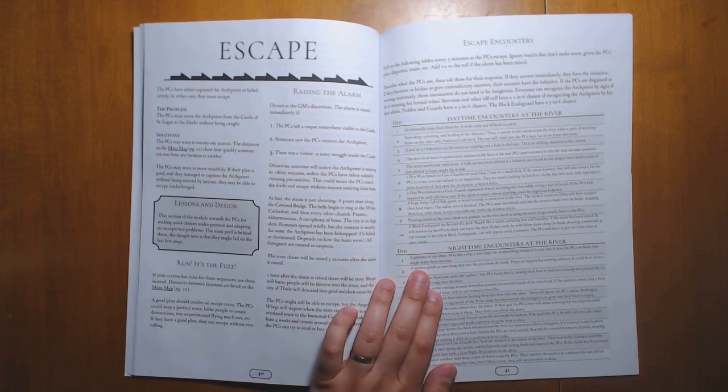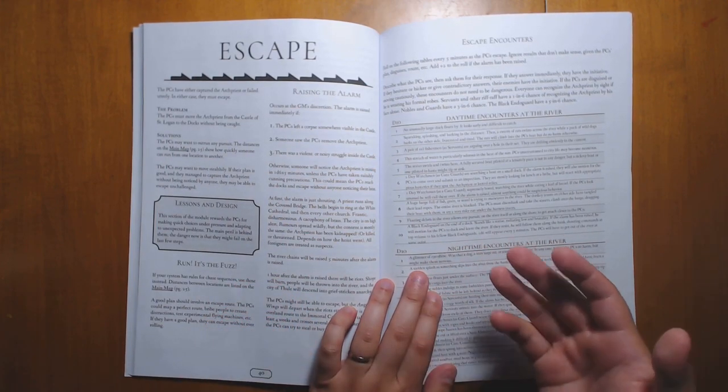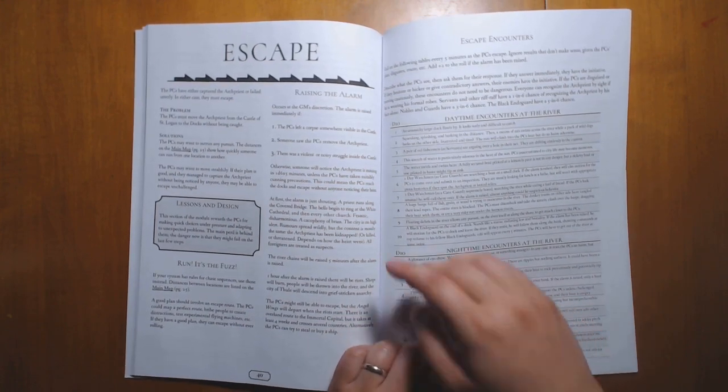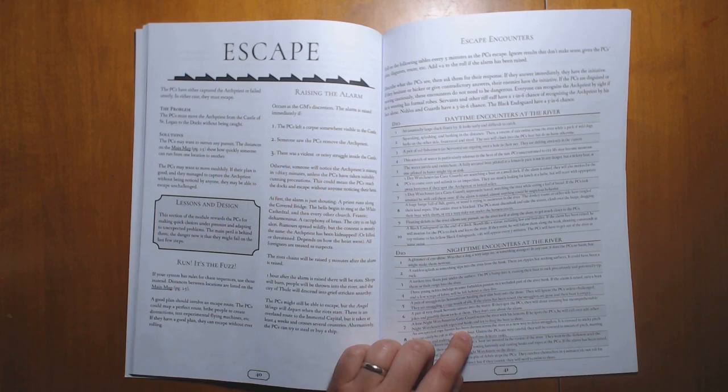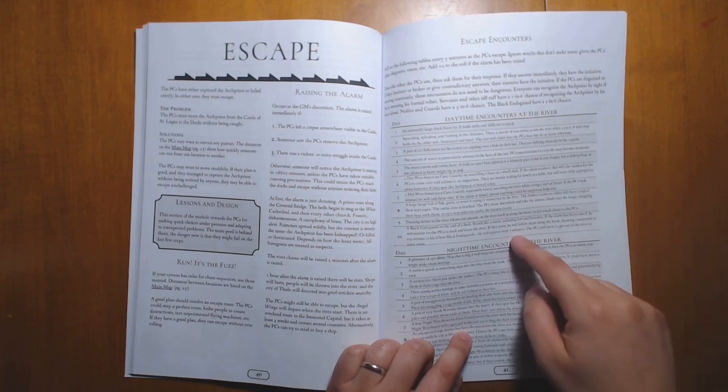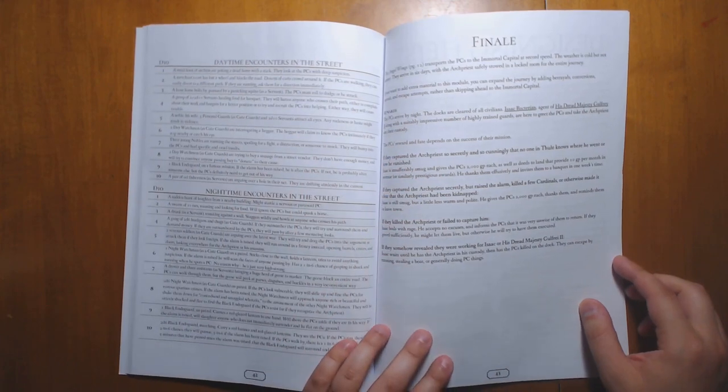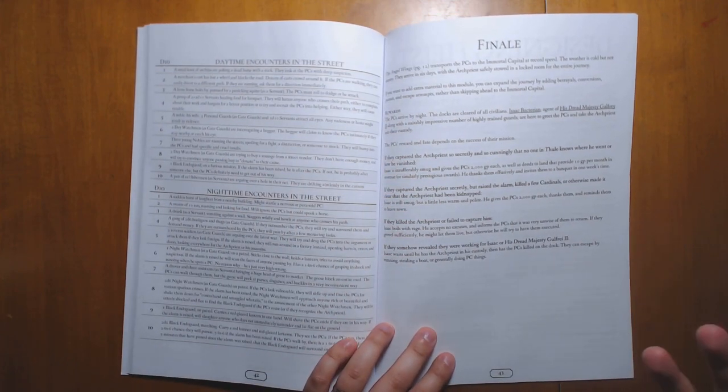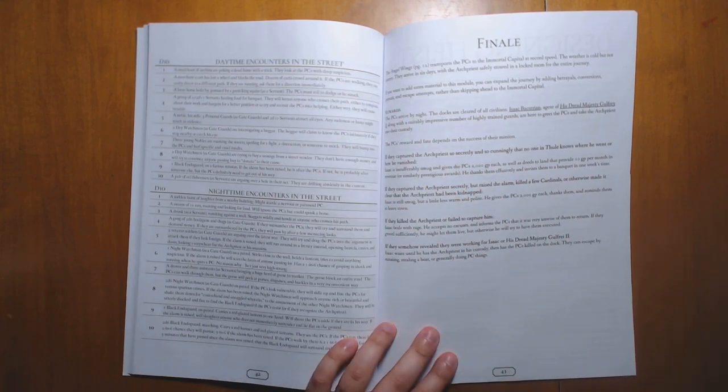And we have some rules for escaping. You might want to use your own chase rules if there is already chase rules in the system of your choice. And there's also rules here for what happens when the alarm is raised, right? The timeline of what's going to happen. As they're escaping, there's another large encounter table for things that happen - daytime encounters at the river, nighttime encounters at the river, and then the same thing for the street. So they're going to have a lot of variety to throw at the players on the fly. You're not going to have to improv things too much because a lot of that work has been done for you.